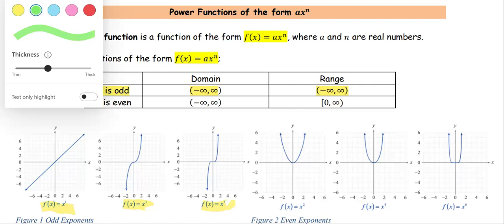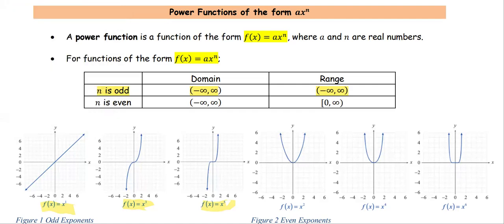In the case that n is an even number, as you see the examples here — f(x) = x squared, x to the 4th, x to the 6th — the graph appears on the upper part of the xy-plane, where x can be any real number from left to right, but the y-value or function value appears only in the upper part, which is values from 0 to infinity, including 0. That's the difference between n odd and n even.